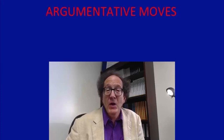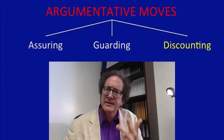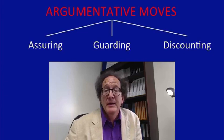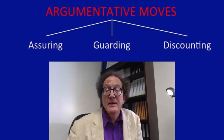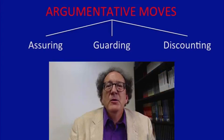In the previous lecture, we looked at the skeptical regress problem, and I introduced three different ways of solving that problem in practical life: namely assuring, guarding, and discounting. In the next three lectures, we're going to look at each of these in much more detail and more carefully so as to understand how they work. Let's begin with assuring.